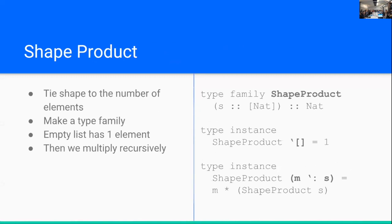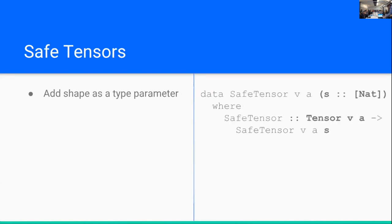One interesting thing we can do with this is we'll create something called a shape product. And this is going to help us tie the type level shape to the number of elements that should go into that shape. So for instance, if we have an empty list for our safe shape, that only has one element, refers to a single number. Whereas if we have a non-empty list, then we'll use multiplication and a recursively defined instance.